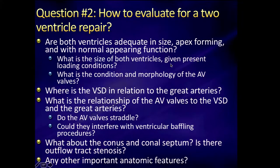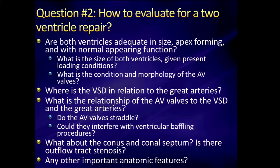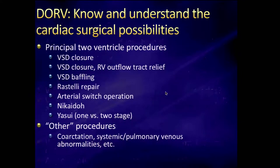The number one question is: are there two ventricles? Are they normal in size, apex-forming? What is their condition, function, and what do the AV valves look like? Then, where is the VSD and where is it in relation to the great arteries? What is the relationship of the AV valves to the VSD and the great arteries? Do the AV valves straddle, and could they potentially interfere with ventricular baffling? What about the conus and the conal septum — the outlet septum? Do not forget about the conal septum.